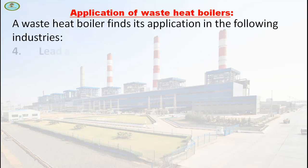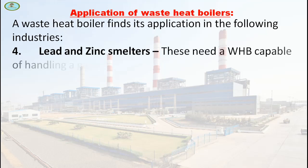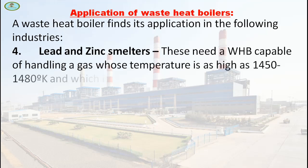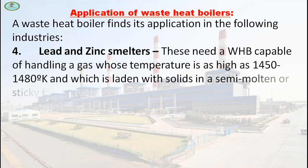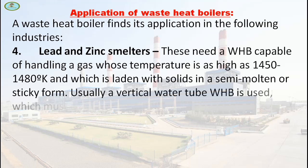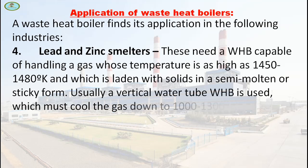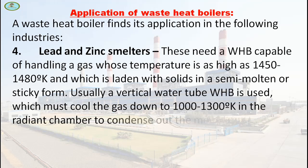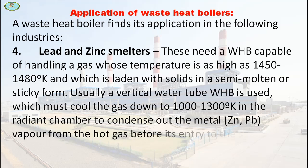Next is lead and zinc smelters. These need a WHB capable of handling gas whose temperature is as high as 1450 to 1480 Kelvin, which is laden with solids in a semi-molten or sticky form. Usually a vertical water tube WHB is used, which must cool the gas down to 1000 to 1300 Kelvin in the radiant chamber to condense out the metal vapor from the hot gas before it enters the superheater and convection shaft.